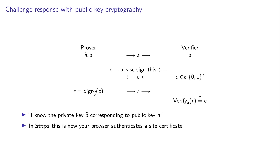You can do a similar thing with hash functions, and you can also do it with public key cryptography. In this case we have a private key, call it a-hat, and a public key. What happens is that the verifier sends a challenge C, asking the prover to sign it using the private key. The prover signs it, and the verifier uses the public key to verify that the answer is correct.